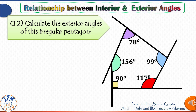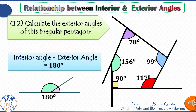To tackle questions on angles comfortably, there is one more formula you need to know: the relationship between an interior angle and its exterior angle. Since they are angles on a straight line, they always add up to 180 degrees. With this in mind, let's try the question on screen: calculate the exterior angles of this irregular pentagon where the interior angles are given. For an irregular polygon these angles are not equal — the exterior angle will be 180 degrees minus the interior angle.